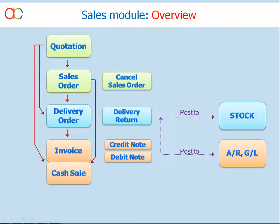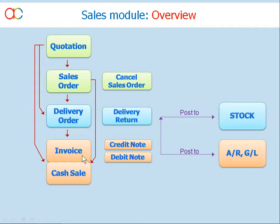The system provides several facilities to ease your transaction process. First of all, document transfer. For example, if you have created a quotation, the quotation can be transferred to a sales order, or to a delivery order, or directly to an invoice and cash sales. Similarly, a sales order can be transferred to a delivery order, or directly to an invoice and cash sales.